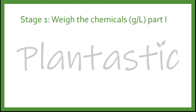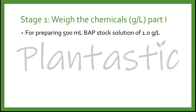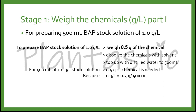Next, we have to weigh the chemical first — Part 1. To prepare 500 ml of BAP stock solution at 1.0 gram per liter. Remember, stock solution is the concentrated solution. So if you want to prepare mg per liter working solution, the stock solution will be gram per liter. For Part 1, I will show you how to prepare the chemicals in gram per liter. To prepare 500 ml of BAP at 1.0 gram per liter, we weigh 0.5 gram of the chemical, dissolve the chemical with solvent, and top up with distilled water to 500 ml. 0.5 gram is needed because if you are preparing 1 liter, it is 1.0 gram; for 500 ml, it will be 0.5 gram.